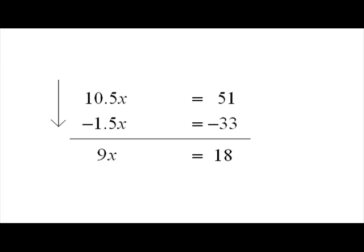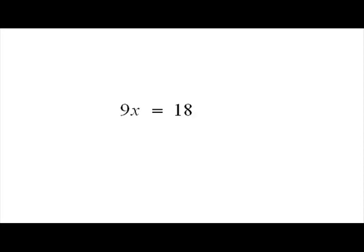10.5x plus a negative 1.5x is equal to 9x. And on the right side, 51 plus a negative 33 is equal to 18. So we have 9x is equal to 18, a simple linear equation with one variable. We're just going to use basic arithmetic to find what x equals.